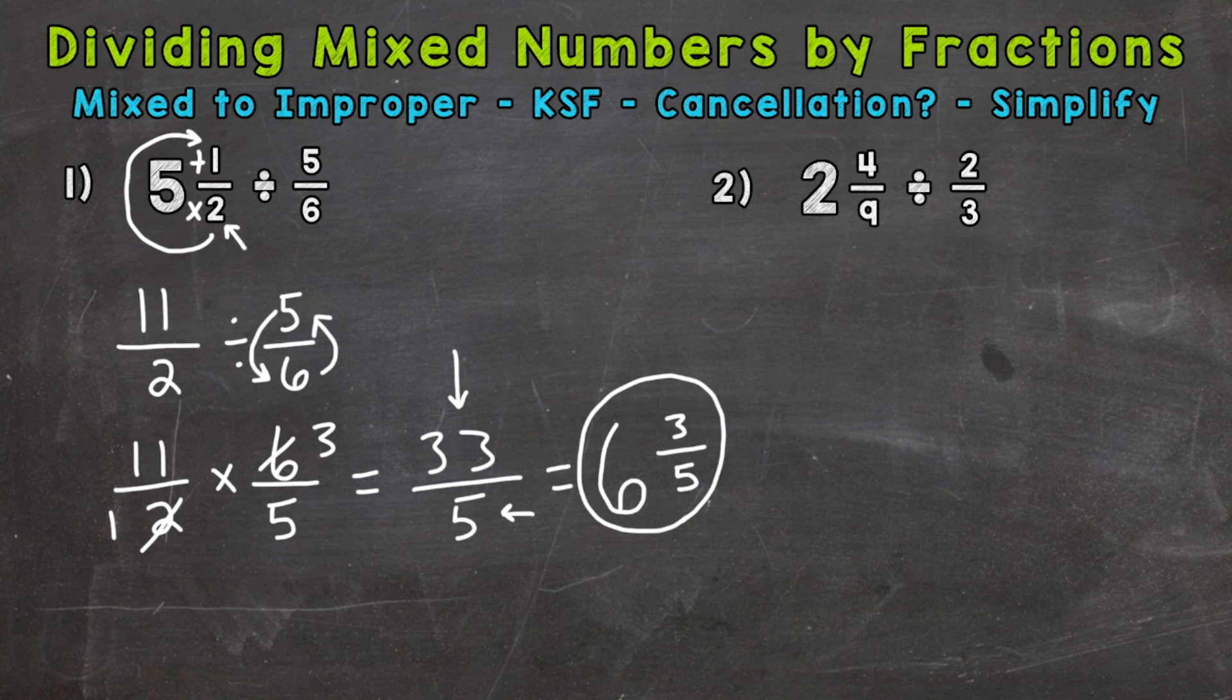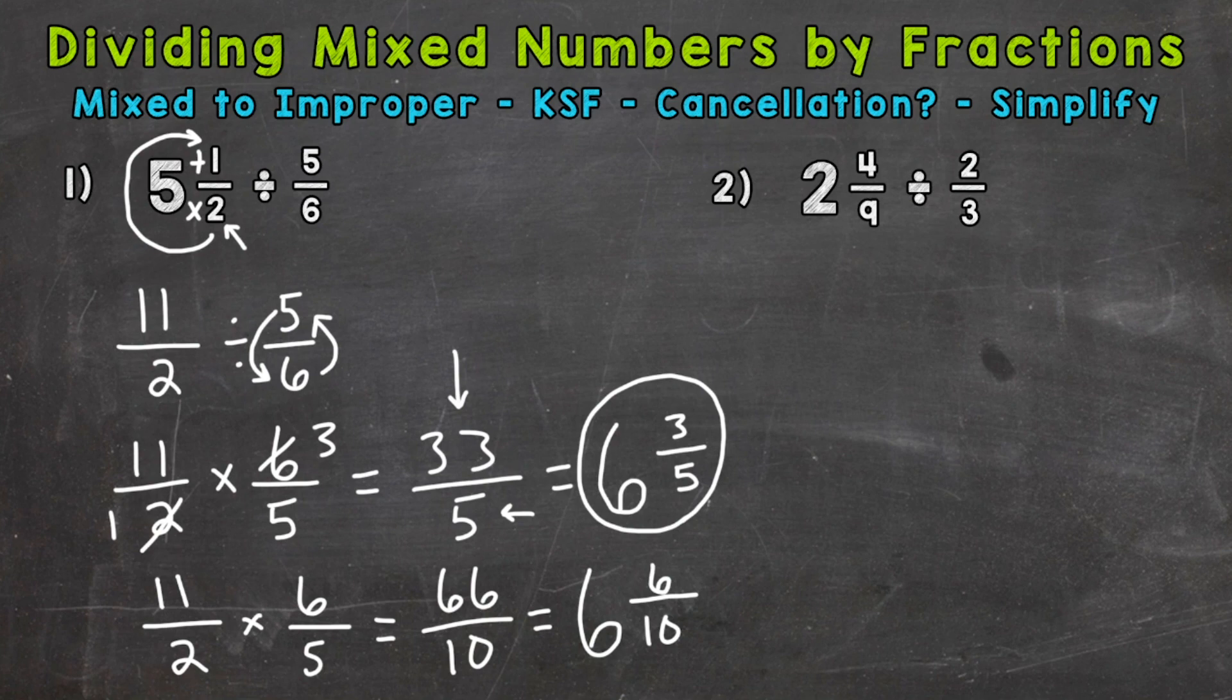Now I do want to show you if we did not use cancellation, what would happen. So let me rewrite the problem. There we go. Now, so we would do 11 times 6 is 66. 2 times 5 is 10. Then we would convert to a mixed number. So how many whole groups of 10 out of 66? Well, 6. That gets us to 60. So we have 6 left over. Remainder of 6. And we keep our denominator of 10 the same. So now our fractional part of that mixed number can be simplified. 6 and 10 have a common factor of 2, a greatest common factor of 2. So divide each by 2. And we end up with 6 and 3 fifths. So you can see that we got the same exact answer. We just had to simplify our answer. Now the cancellation method, we simplified our problem before we multiplied straight across. So you can get to the correct answer without using cancellation. It just comes in handy with some problems as far as simplifying things before multiplying straight across.